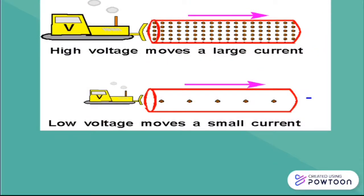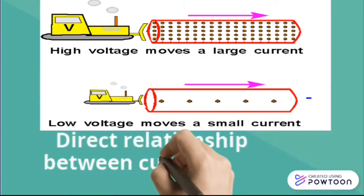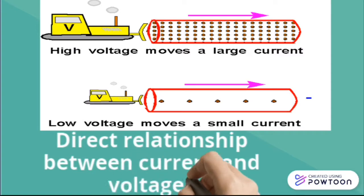This image explains the difference between the voltage and the current and the relationship between them. The relationship between them is a direct relationship. It means that if the voltage is a high value, also the current will be a high value.